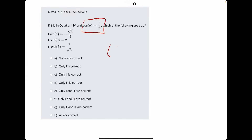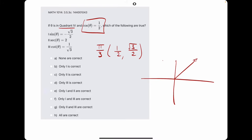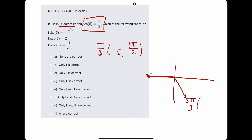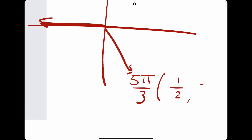Cosine equals 1 half. It helps to know the unit circle — cosine is 1 half when the y value is root 3 over 2, corresponding to any pi over 3 multiple. We're looking for the angle in quadrant 4. Pi over 3 is in Q1, 2 pi over 3 in Q2, 3 pi over 3, 4 pi over 3, and 5 pi over 3. So 5 pi over 3 is the angle in quadrant 4, with ordered pair positive 1 half and negative root 3 over 2.